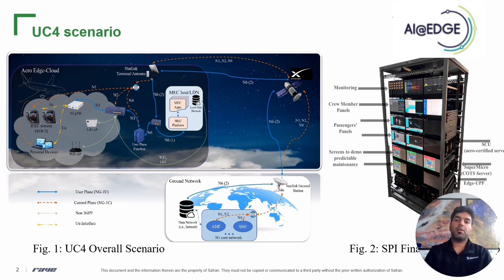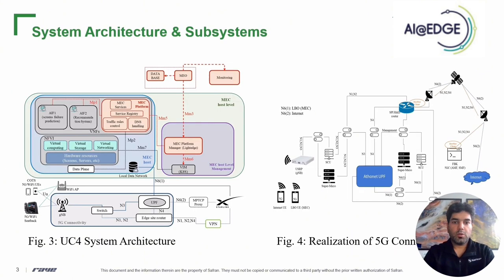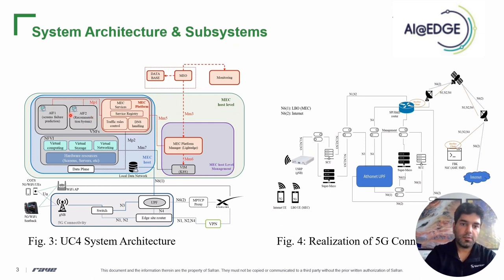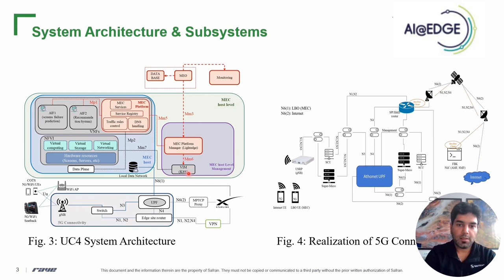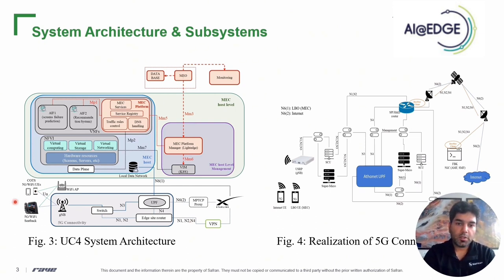Figure 2 shows the final deployment of the Use Case 4 test rack with all components and applications delivered from AEDGE partners or implemented internally. The system architecture has two main AIFs: one for predictable maintenance and one for the recommendation engine. The IFEC system is based on 21 screens plus two servers, all managed by Kubernetes. We also have our MEC platform manager, LightEdge, delivered by FVK, and the MEO or MEC orchestrator delivered by i2CAT.